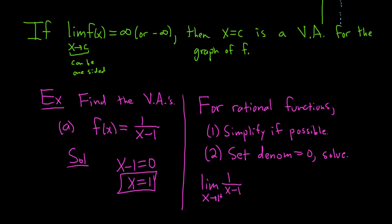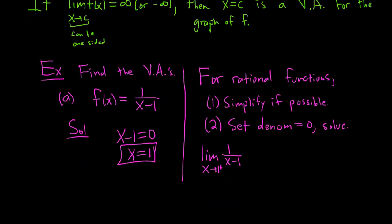If you approach 1 from the right, there's no real way to show the work here, so what you do is think about what's going on. You have a positive number on top. On the bottom, you're approaching 1 from the right, so think of a number that's slightly bigger than 1, like 1.01. So you have like 1.01 minus 1.